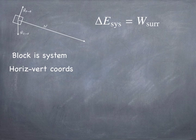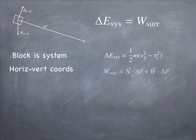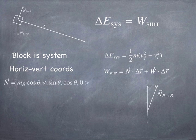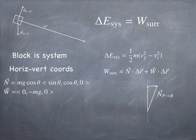Since the system consists of just the block, the energy of the block is its rest energy plus its kinetic energy. The rest energy doesn't change, so the change in the energy of the system is simply the change in the kinetic energy of the block. The work done on the system by the surroundings is the work done by the normal force plus the work done by the weight. The normal force has components in the x and y directions. Its magnitude is mg cosine θ, with an x component of sine θ and a y component of cosine θ.